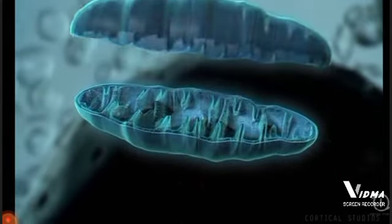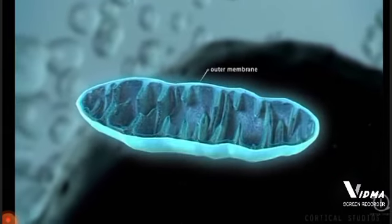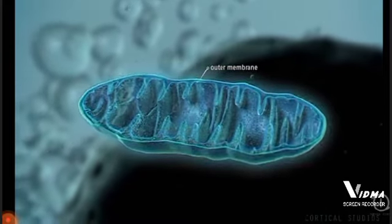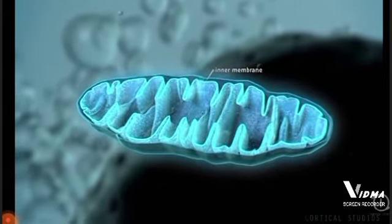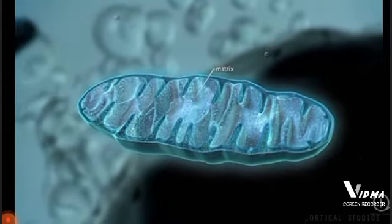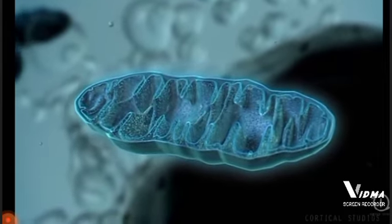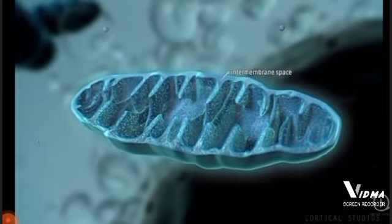Mitochondria consist of two membranes, an outer membrane separating it from the cytosol, and an inner membrane surrounding the so-called matrix. The area between these membranes is called the intermembrane space.